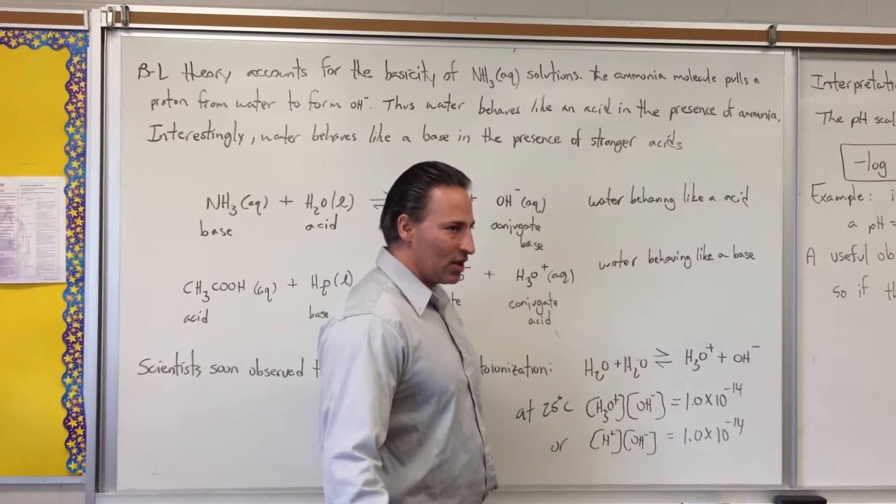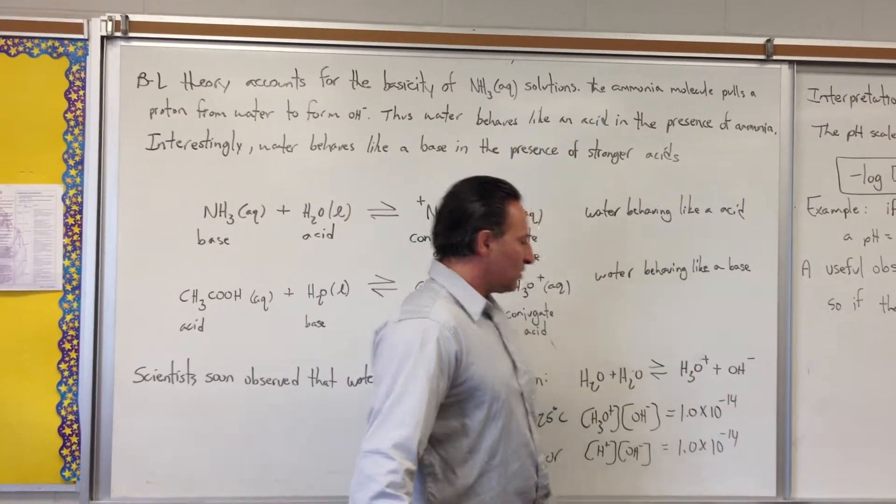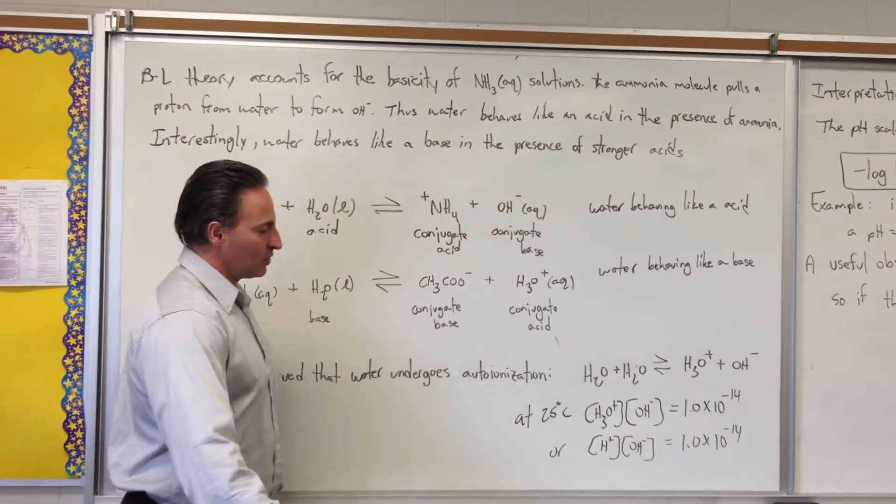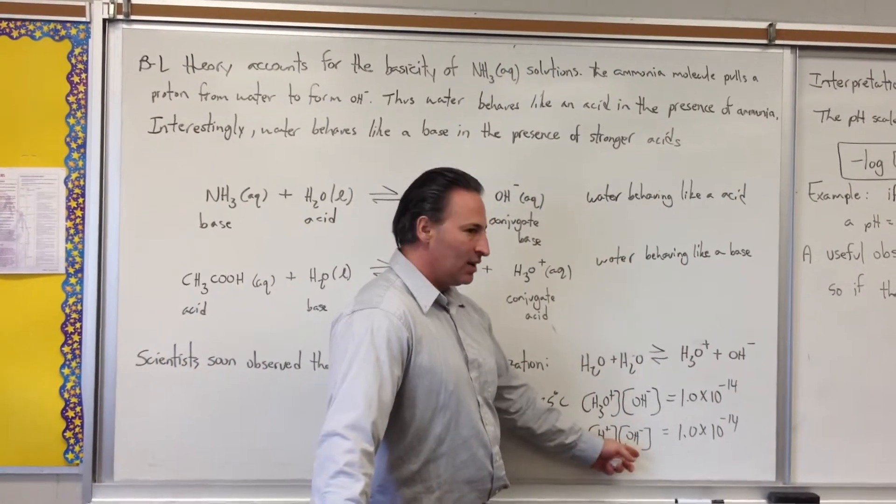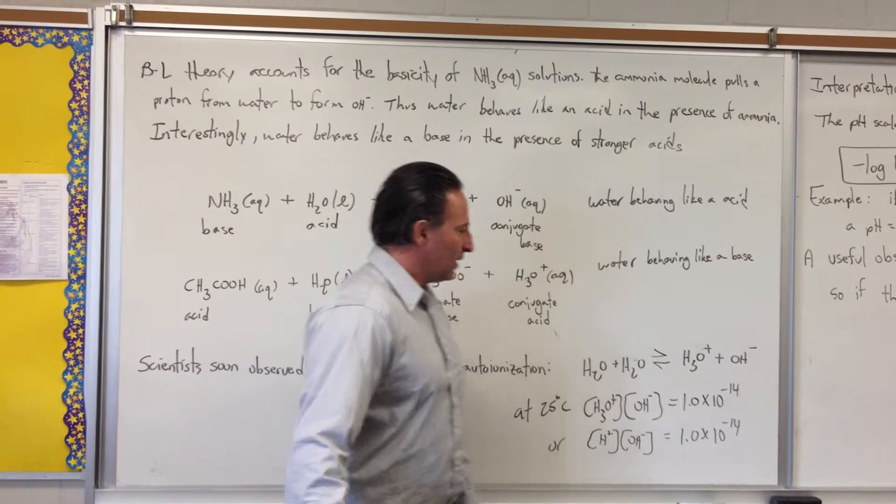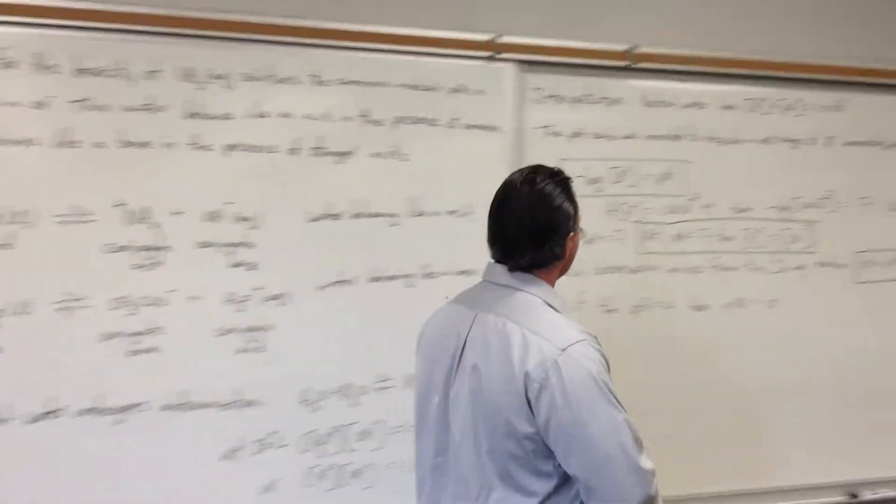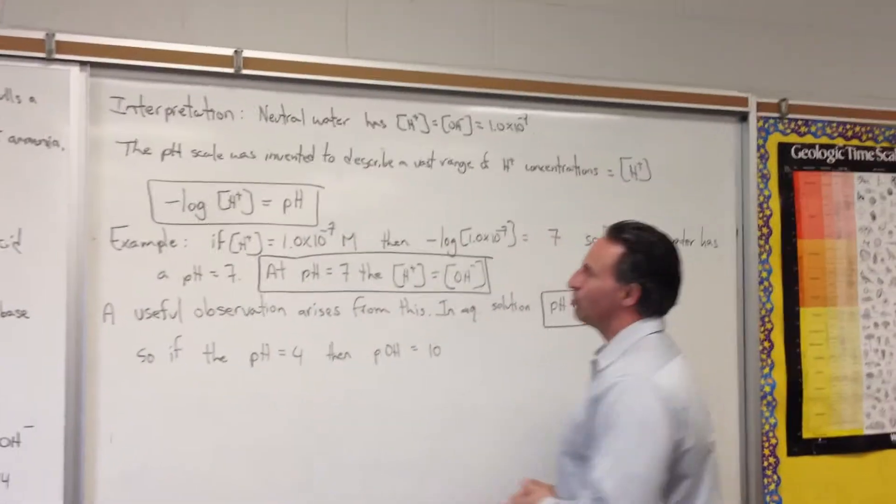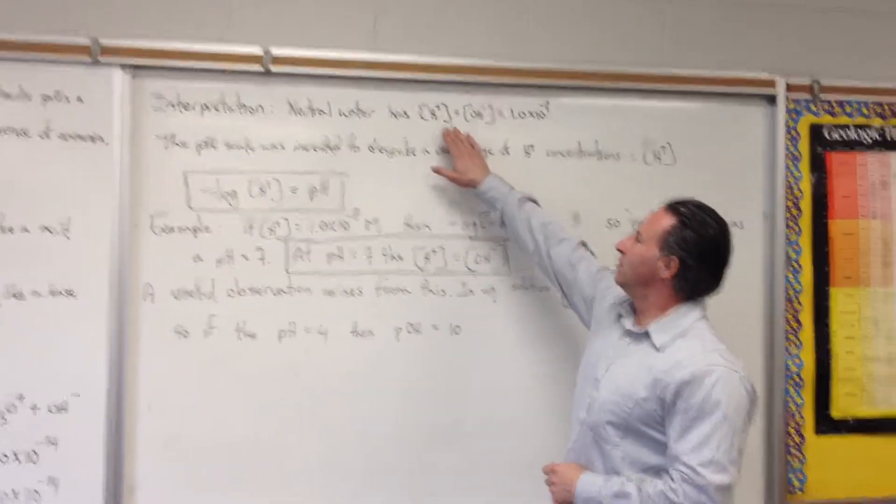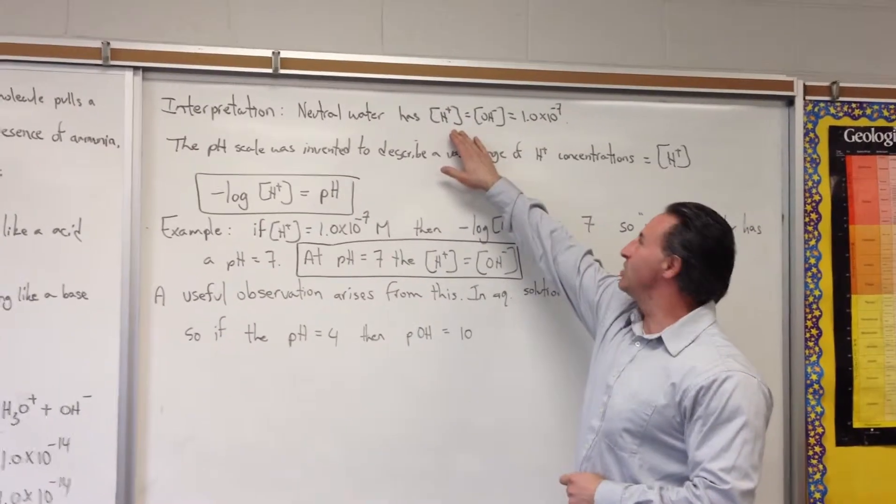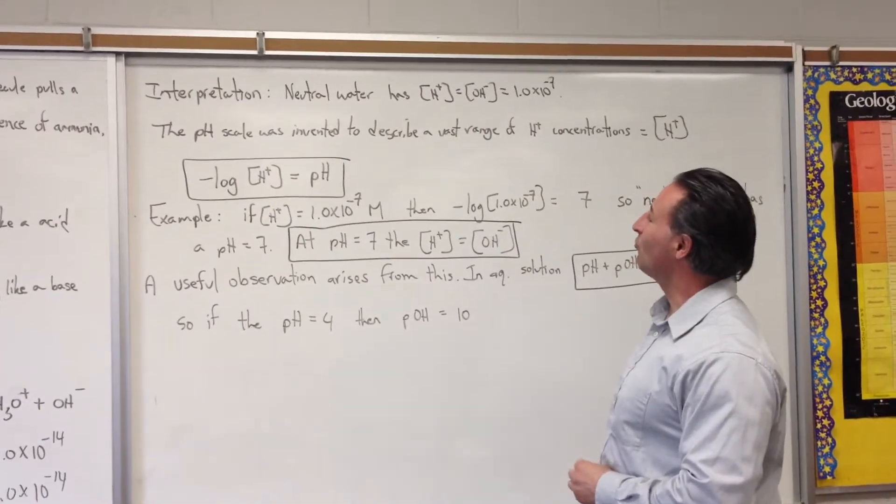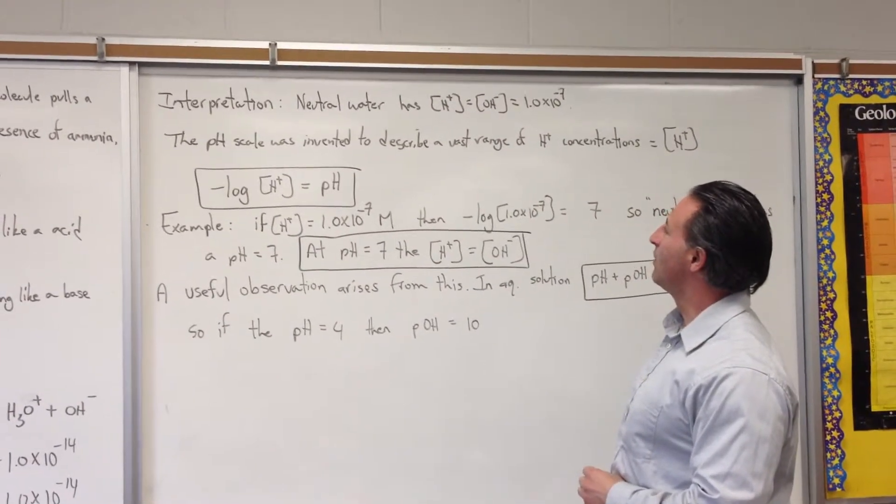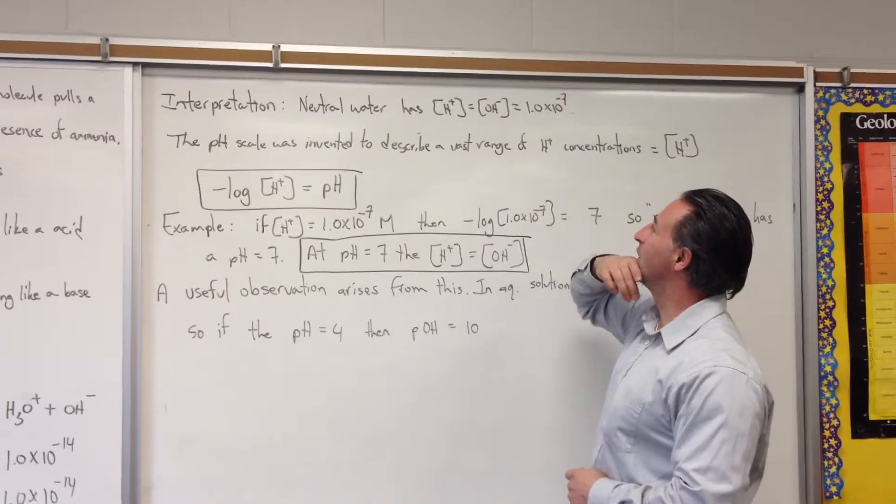If you multiply the two concentrations, you get 1.0×10^-14. You can also restate the same set of conditions by saying a proton and a hydroxide anion. The interpretation is that neutral water has a proton concentration of 1.0×10^-7, and that it equals the hydroxide ion concentration.